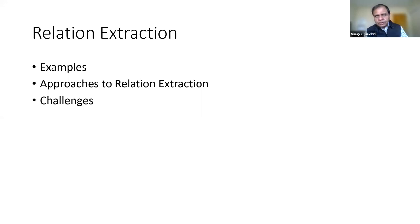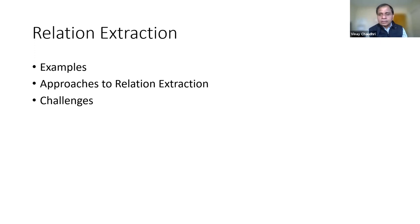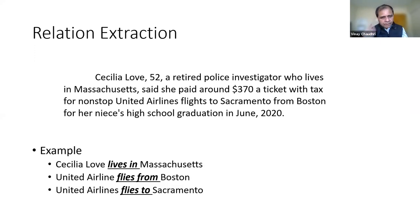Now I'll move on to methods for relation extraction. Using the same sentence about Cecilia Love, we want to extract relations such as 'Cecilia Love lives in Massachusetts,' 'United Airlines flies from Boston,' and 'United Airlines flies to Sacramento.' Another popular task is extracting information from Wikipedia — for example, the spouse relationship for Larry King, who has been married multiple times with temporal information. This quickly becomes very complicated when associating temporal information with extracted facts.